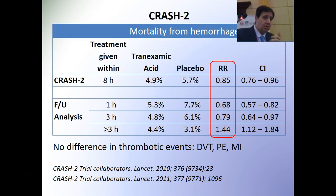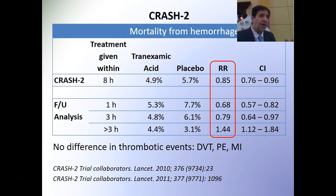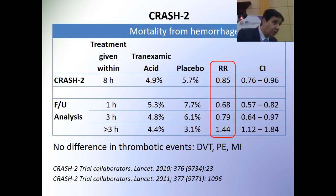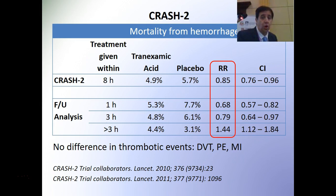In the initial CRASH-2 publication, mortality from hemorrhage was calculated when tranexamic acid was given within eight hours, with a relative risk of 0.85. A follow-up analysis of the same patients then separated outcomes for those receiving it within the first hour, within three hours, and beyond three hours — and this is where they found a major and significant difference. So tranexamic acid works, but it works much better if given earlier rather than later.